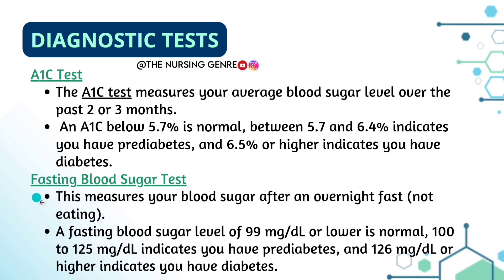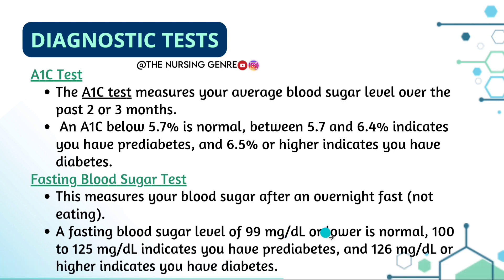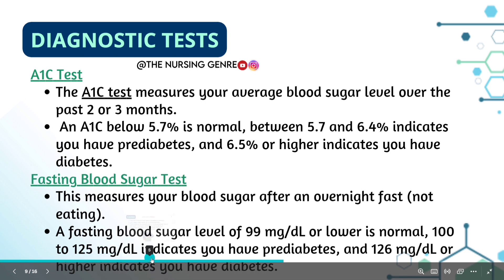Fasting blood sugar test measures your blood sugar after an overnight fast. A fasting blood sugar level of 99 mg/dL or lower is normal. A level of 100 to 125 mg/dL indicates pre-diabetes. A level of 126 mg/dL or higher indicates diabetes.